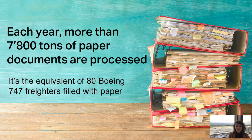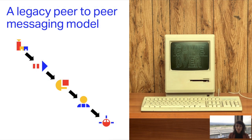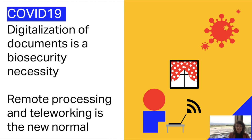It's not only goods that are transported by air cargo but also a huge amount of documents. Air cargo is based on a legacy peer-to-peer messaging model, meaning every stakeholder in the supply chain sends information to the next partner. This can be problematic for two reasons: if one stakeholder fails in sending information, that creates a bottleneck; and if there is a mistake at some point, it propagates throughout the chain. In the context of our current crisis, the digitalization of documents is a biosecurity necessity — we want touchless cargo, and digitalization is more important than ever.